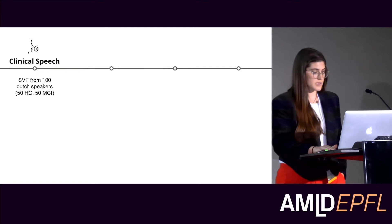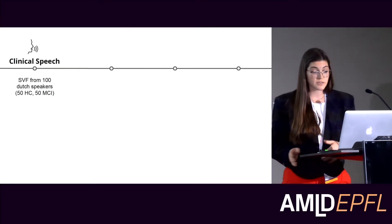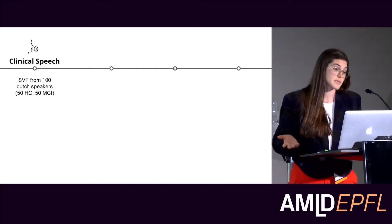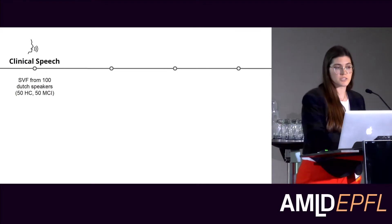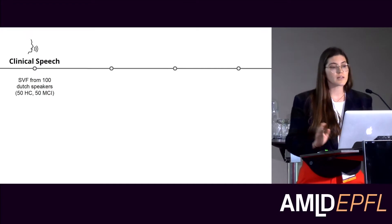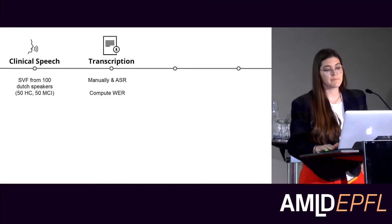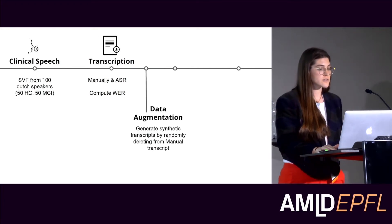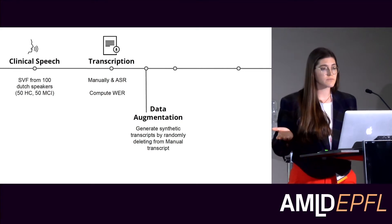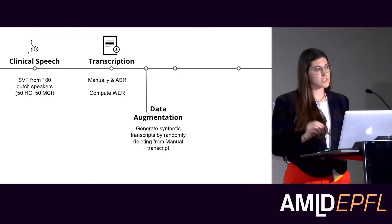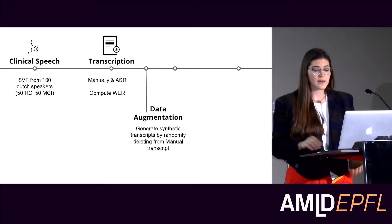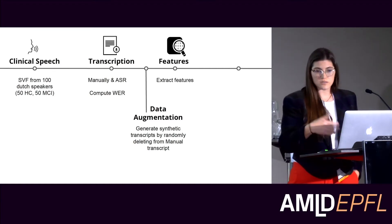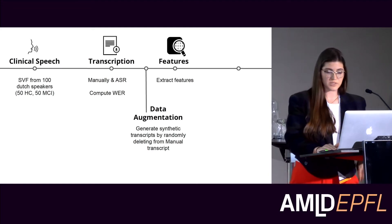For the clinical speech data we had semantic verbal fluency from 100 Dutch speakers: 50 healthy controls and 50 mild cognitive impairment. This is the stage everyone is interested in for dementia because there's no cure, so we look at how to prevent symptoms from getting worse by catching dementia earlier — that stage is called mild cognitive impairment. We both manually transcribed and used ASR, computed the word error rate, then augmented the data by taking the word error rate per person, deleting randomly from their transcripts, and generating new transcripts. We generated every possible combination, printed 1,000, selected randomly, and extracted features from 10 of those for a feasibility experiment.